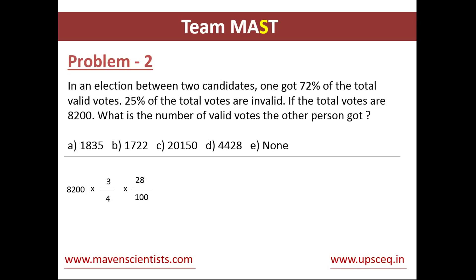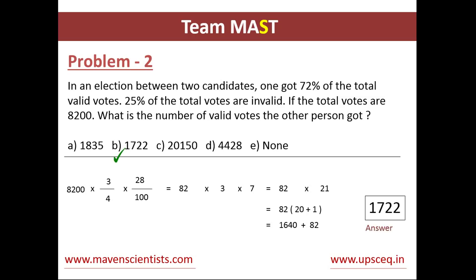Let's solve this figure. We multiply: 28 divided by 4 gives us 7, and 8200 divided by 100 gives us 82. So now we are left with 82 × 3 × 7, which gives us 82 × 21. Breaking it as 82 × 20 plus 82 × 1: 82 × 20 is 1640, plus 82 gives us 1722. So 1722 is the answer to this problem.